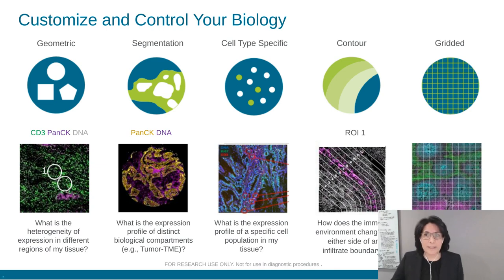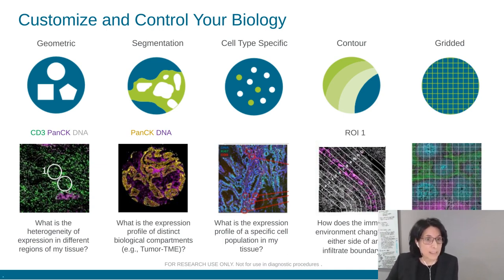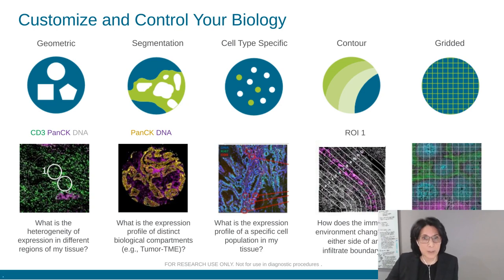There are a number of ROI selection strategies available depending on your scientific question. You can follow a geometric strategy to define the heterogeneity of expression in different regions of a tissue. You could also use segmentation to evaluate expression profiles of distinct biological compartments. Cell type-specific contour and gridded options are also available depending on the best approach to address your scientific questions.